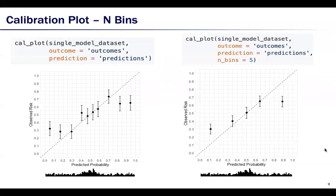Calibration plots can be drawn by calling the calplot function. The default calibration plot uses 10 bins. Users have the option to change the number of bins using the n_bins parameter.